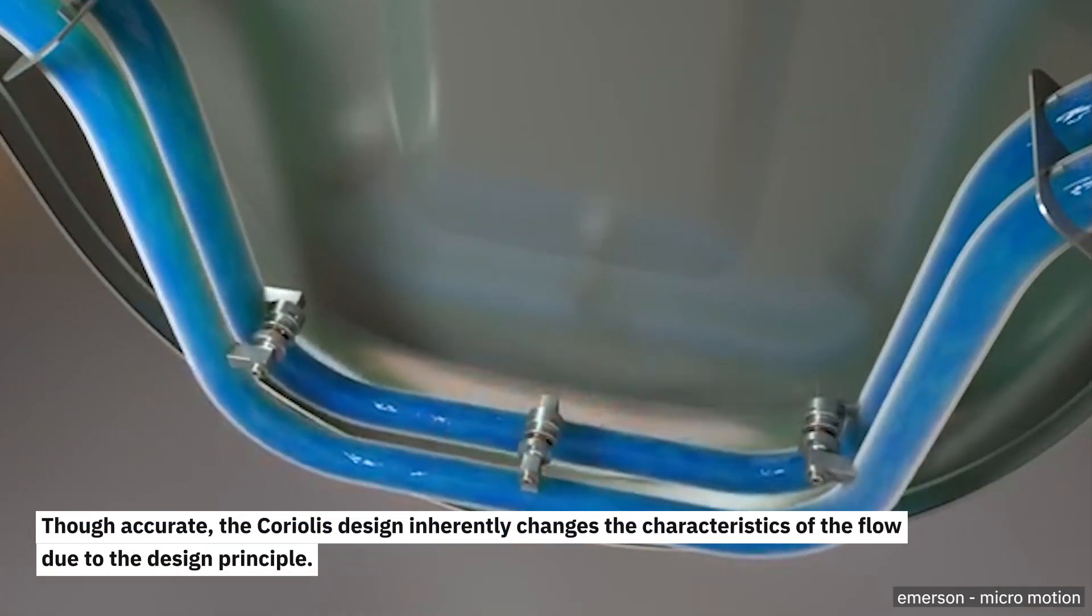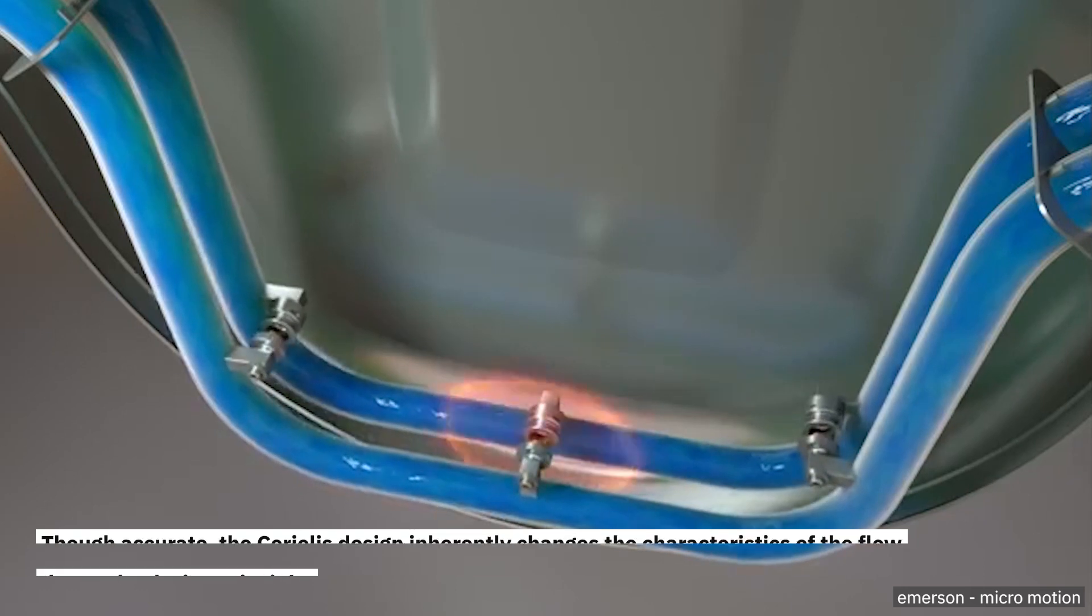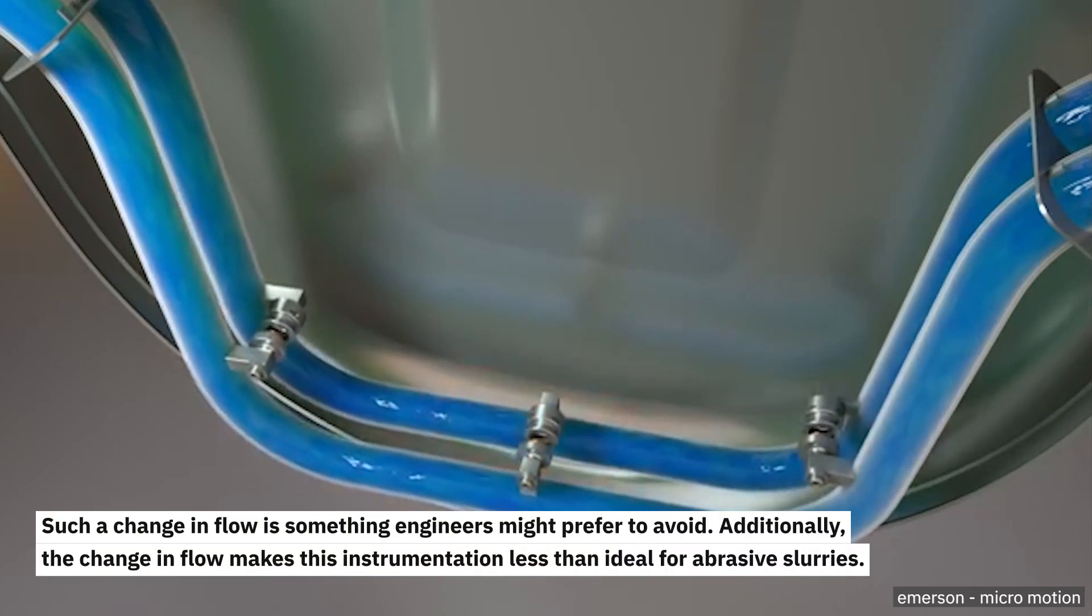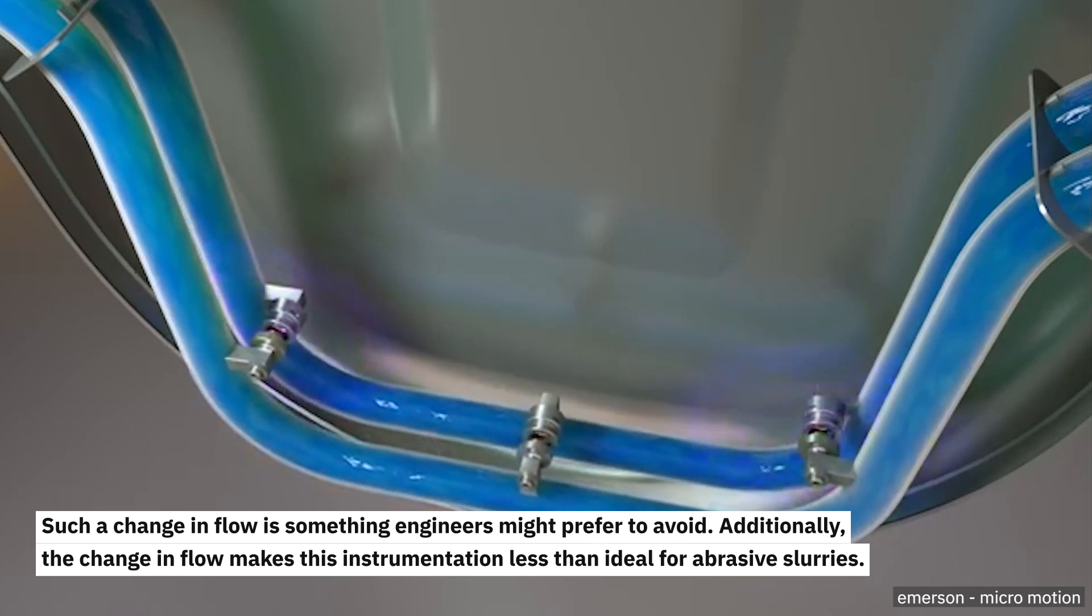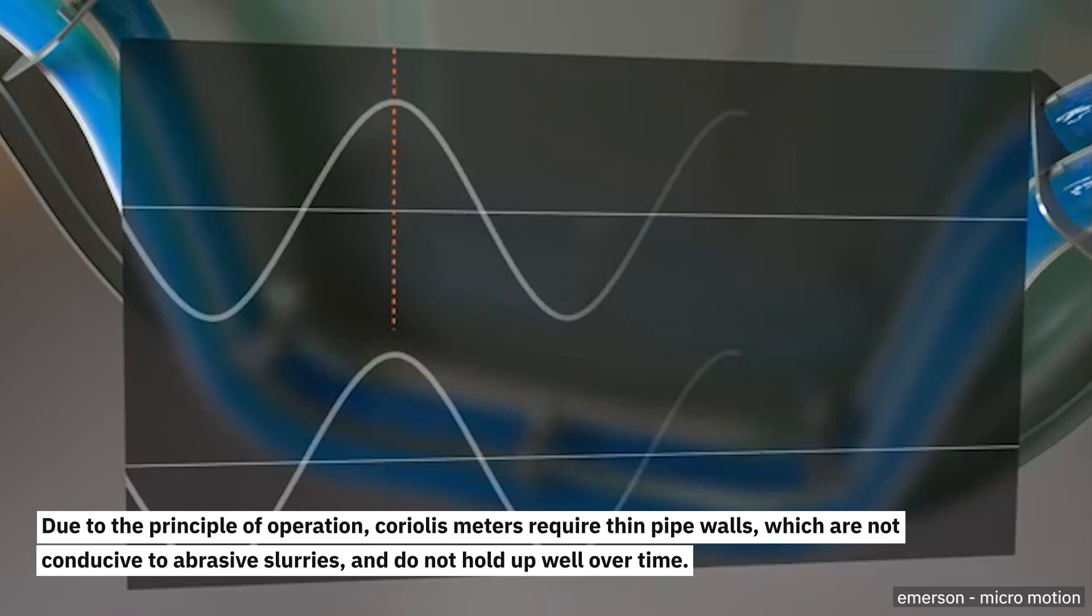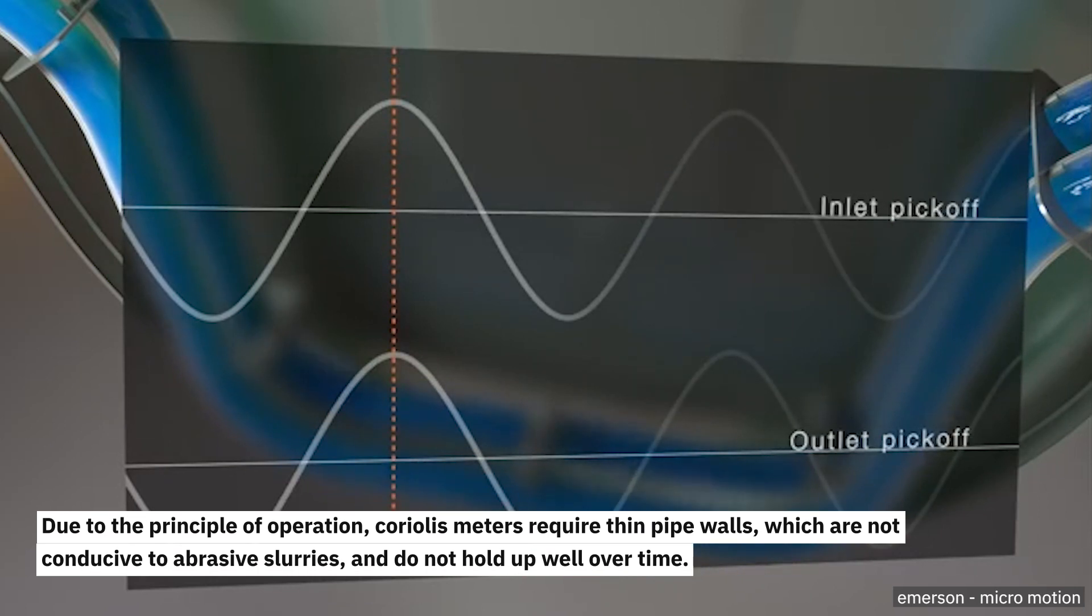Such a change in flow is something engineers might prefer to avoid. Additionally, the change in flow makes the instrumentation less than ideal for abrasive slurries. Due to the principle of operation, Coriolis meters require thin pipe walls, which are not conducive to abrasive slurries and do not hold up well over time.